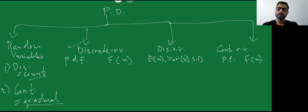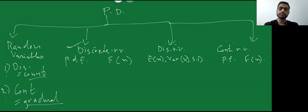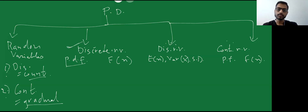Let's move to discrete random variables. As we've seen, there are two types: discrete and continuous. The rest of the chapter is based on solving these two types. For discrete random variables, we need to find the probability distribution function, also called the probability mass function — because the mass of values is present at particular points — and the cumulative distribution function.